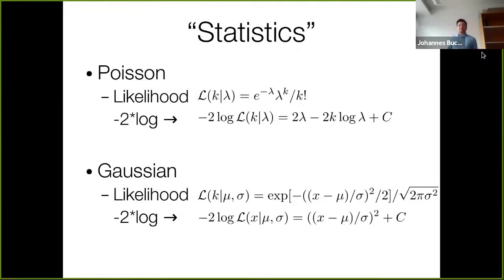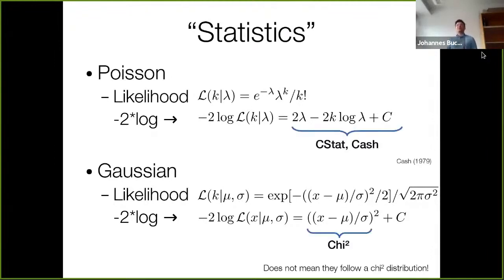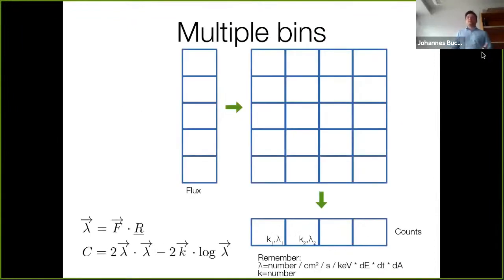Just to remind you about count data, here is the Poisson distribution formula plotted on the right. The counts are integers and cannot be negative. You see from the distribution that it's not a symmetric distribution. So if you use gaussians they will lead to biases in the low count regime for sure. If you take this Poisson likelihood and apply the trick of taking the logarithm and multiplying by minus two, you get this formula which is known as C-stat or Cash statistics.